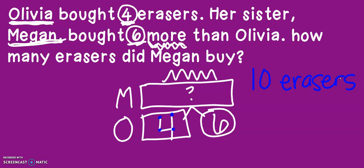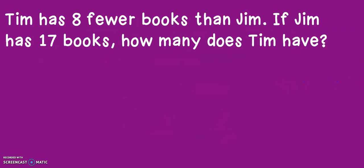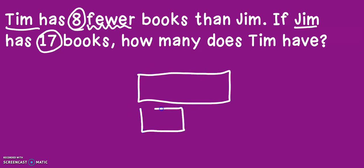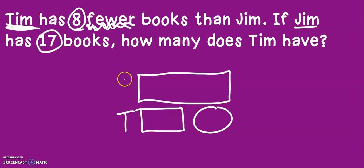We have to read the problems very carefully to decide who gets the big bar and who gets the small bar before we can start plugging in our numbers. Let's try another: Tim has eight fewer books than Jim. If Jim has 17 books, how many does Tim have? We know that Tim has fewer books — fewer means less — so Tim gets the smaller bar, and Jim must get the larger bar.